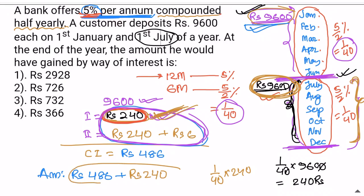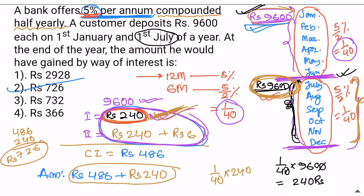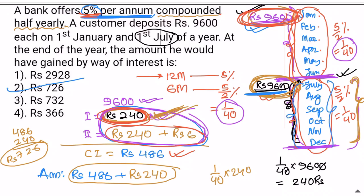So 486 plus 240 gives 726. This is the compound interest. For the deposit on 1st January: it goes through two full cycles, so the interest is 486. For the deposit on 1st July: it goes through only one cycle, so the interest is 240. The total compound interest is 726 rupees.